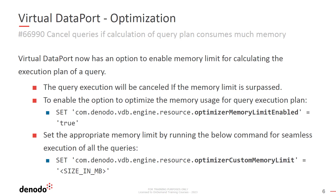Virtual Dataport now has the option to enable a memory limit for calculating the execution plan of a query. If it crosses the memory limit, the query execution will be automatically cancelled. The limit set in the server configuration for maximum query size is considered for queries that are actually running, not for calculating the execution plan. You can see in the slide the command to enable this option. Please note that the optimization of complex queries may require much more memory than actual query execution, so if you enable this configuration, please ensure that all your queries are working fine.